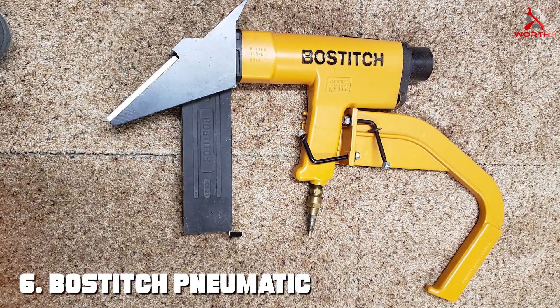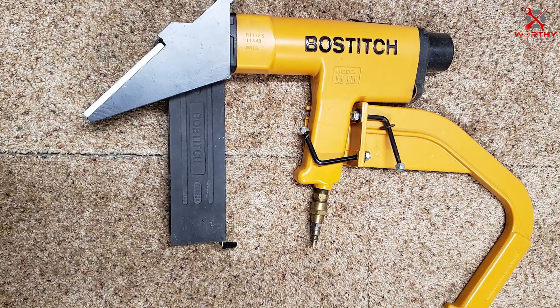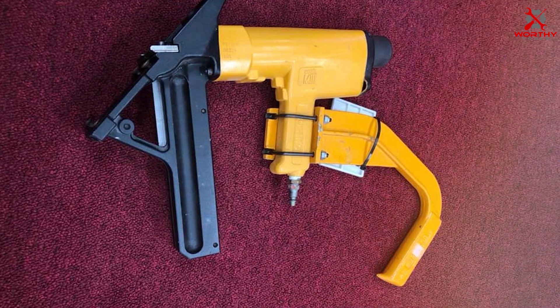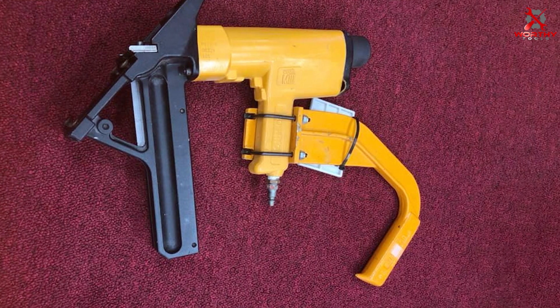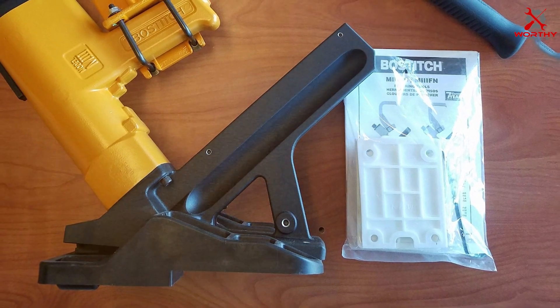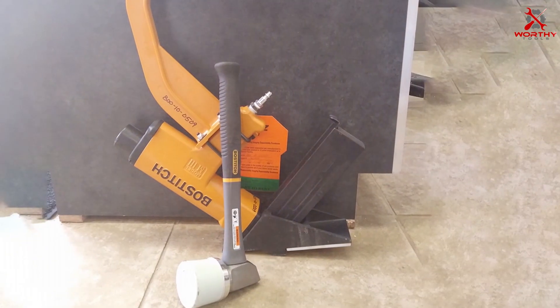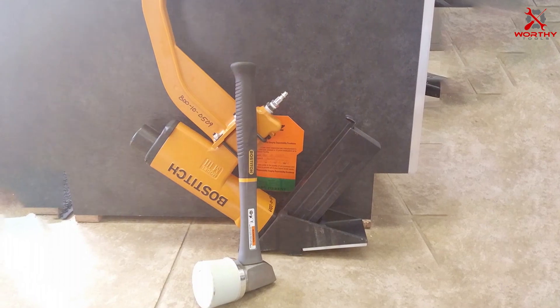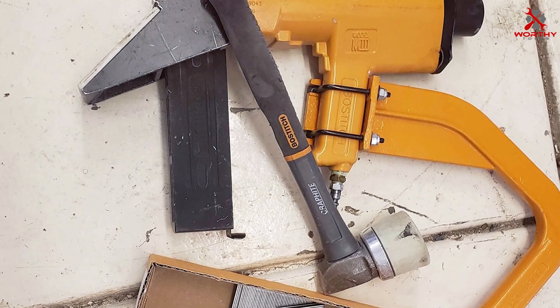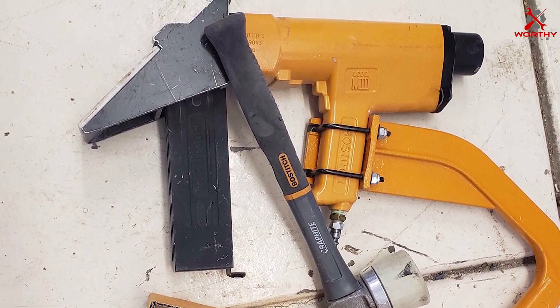Number six: BOSTITCH Pneumatic Flooring Nailer MIIIFN. The BOSTITCH MIIIFN is a powerhouse in the realm of flooring nailers designed for heavy-duty use. This pneumatic flooring nailer is built for efficiency and durability, making it a top choice for professionals. The tool's robust construction ensures it can handle the rigors of continuous, demanding use. Its pneumatic operation provides a high level of power and precision, essential for professional flooring installations. The MIIIFN's ergonomic design minimizes user fatigue, a significant factor during long projects. The tool's compatibility with a range of flooring thicknesses and materials adds to its versatility, making it suitable for various types of flooring projects.